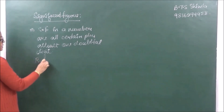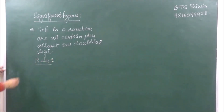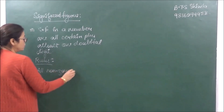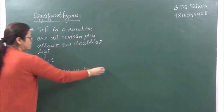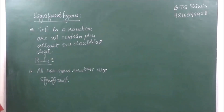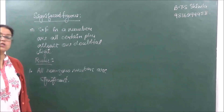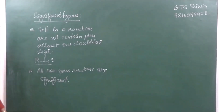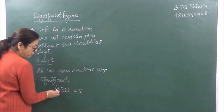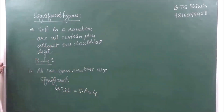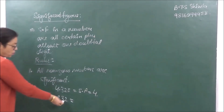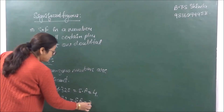Now what are the rules to calculate significant figures? Rule 1: All non-zero digits are significant. So whatever non-zero digits are present in a number, they are all significant. For example, 4.325 has 4 significant figures. Another example: 2.32 has 3 significant figures.